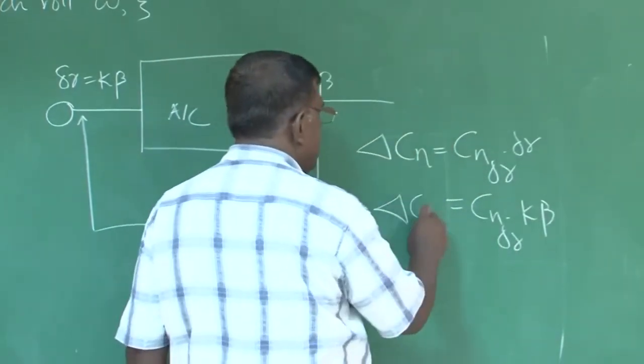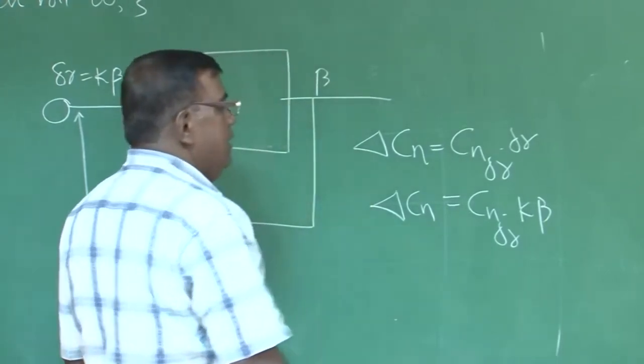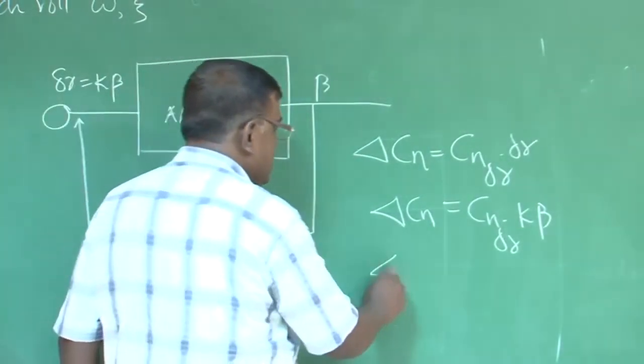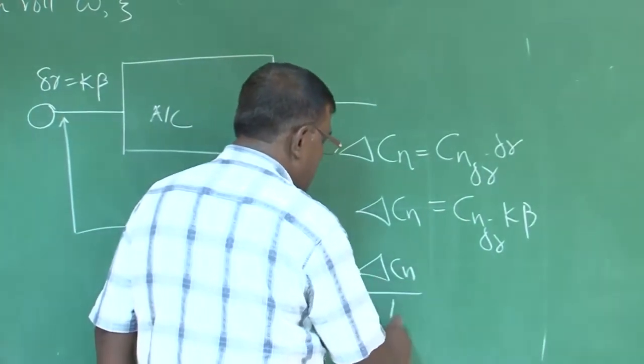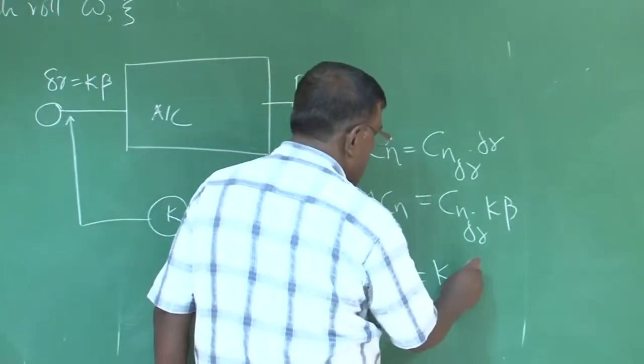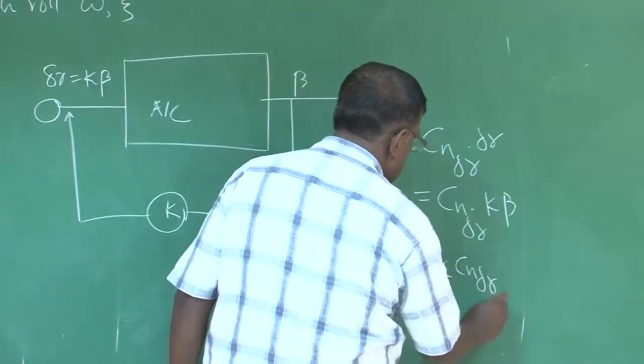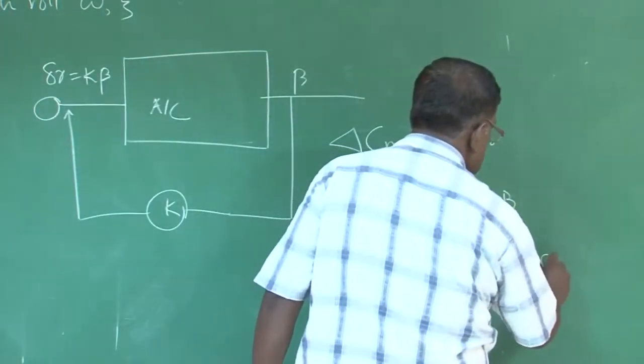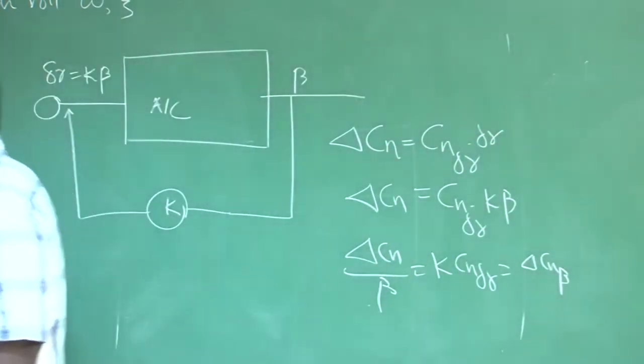is delta c n beta will be how much? That is delta c n by beta that is k c n delta r. So, this is delta c n beta.